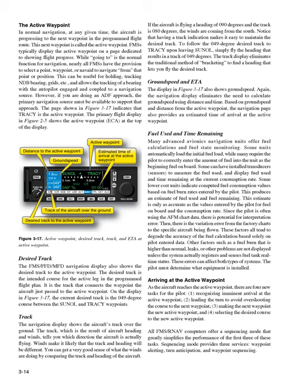However, if you are doing an ADF approach, the primary navigation source must be available to support that approach. The page shown in Figure 3-17 indicates that TRACY is the active waypoint. Desired track: the FMS navigation display also shows the desired track to the active waypoint. The desired track is the intended course for the active leg in the programmed flight plan — it is the track that connects the waypoint the aircraft just passed to the active waypoint. On the display in Figure 3-17, the current desired track is the 049-degree course between the Sunol and TRACY waypoints.